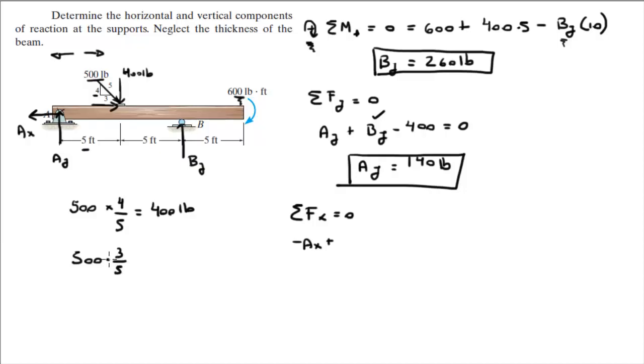And that is equal to 300 pounds. That gives you this component right here. So it's 300 going to the right, so let's say it's positive, is equal to 0. So Ax is equal to 300 pounds.